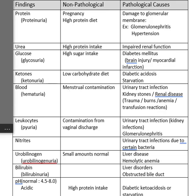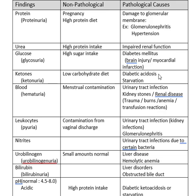Ketones: if you have a low-carb diet, that would be non-pathological — something you did to yourself. But a pathological cause would be starvation or diabetic acidosis. That's a danger signal right there.